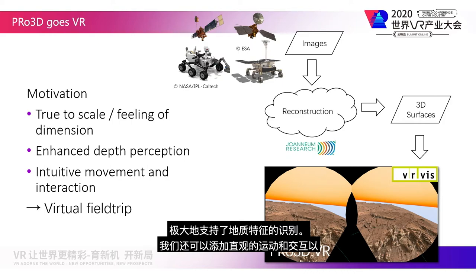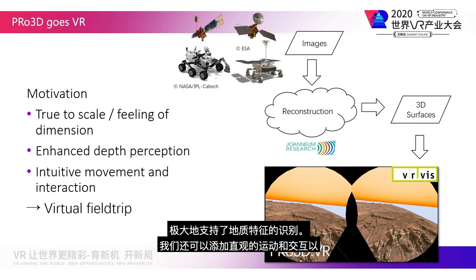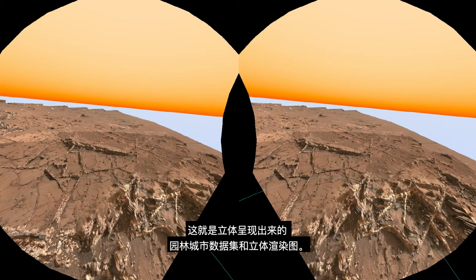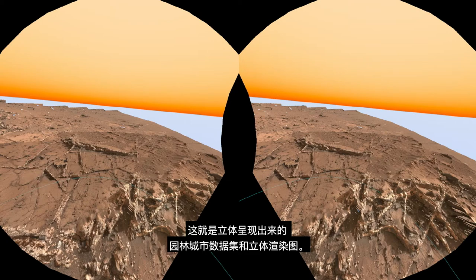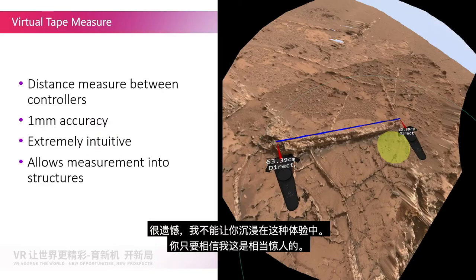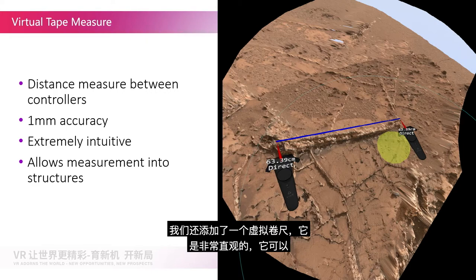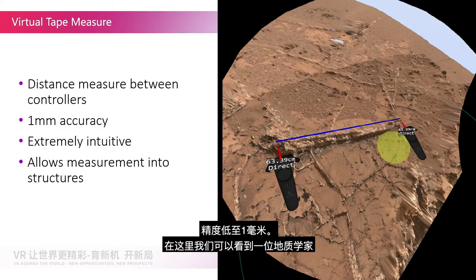We can also add intuitive movement and interaction to walk around the immersive environment and thus create a virtual field trip. This is the stereoscopic rendering of the Garden City dataset. We also added a virtual tape measure, which is extremely intuitive, and it can measure geological features due to the tracking of the Vive setup down to 1 mm accuracy.